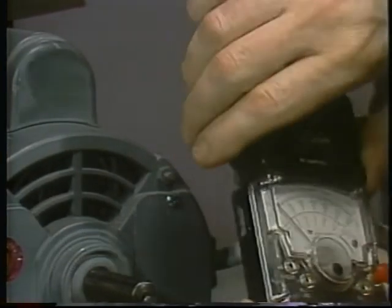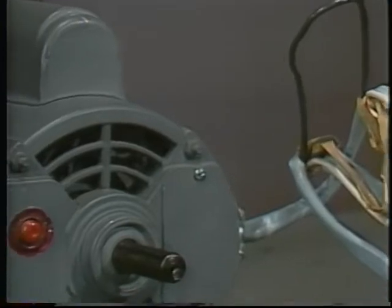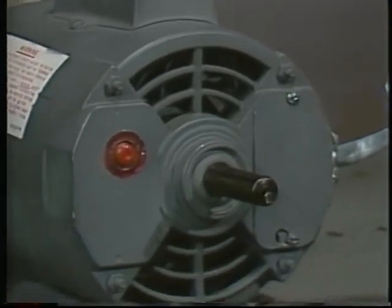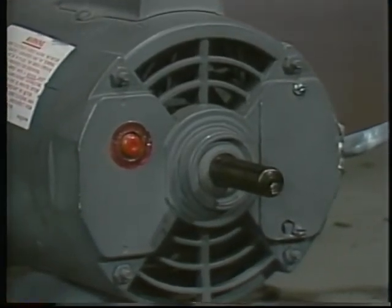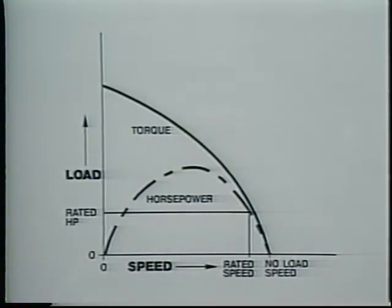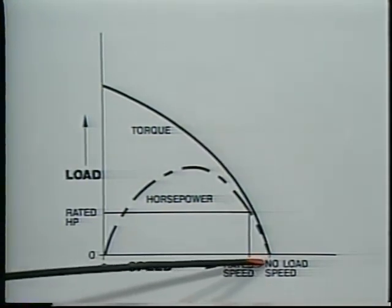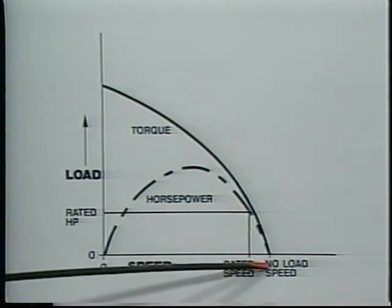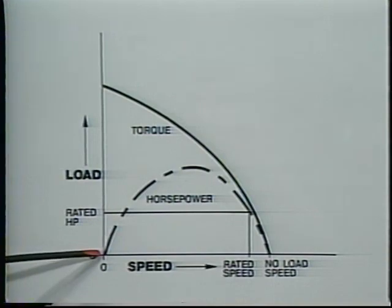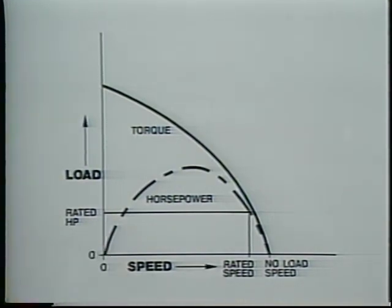We can learn more about motor life and efficiency by taking a closer look at how speed and torque affect horsepower. If we plot motor horsepower output along with torque, both are zero at no load — zero torque means zero horsepower. At stall, horsepower is also zero: nothing is moving and no work is being done, even though the motor is drawing a lot of current.